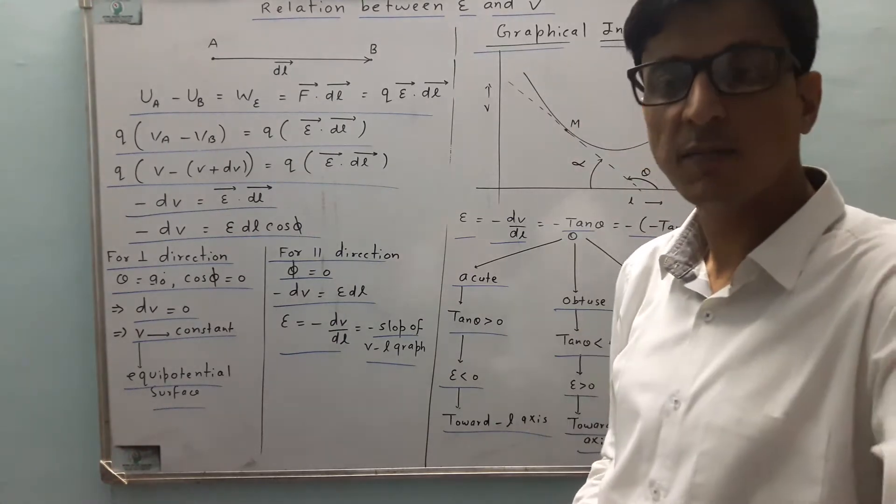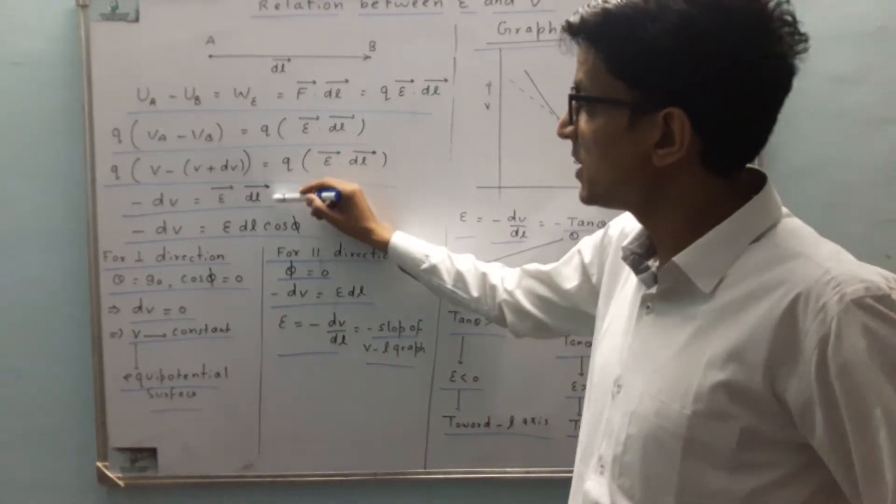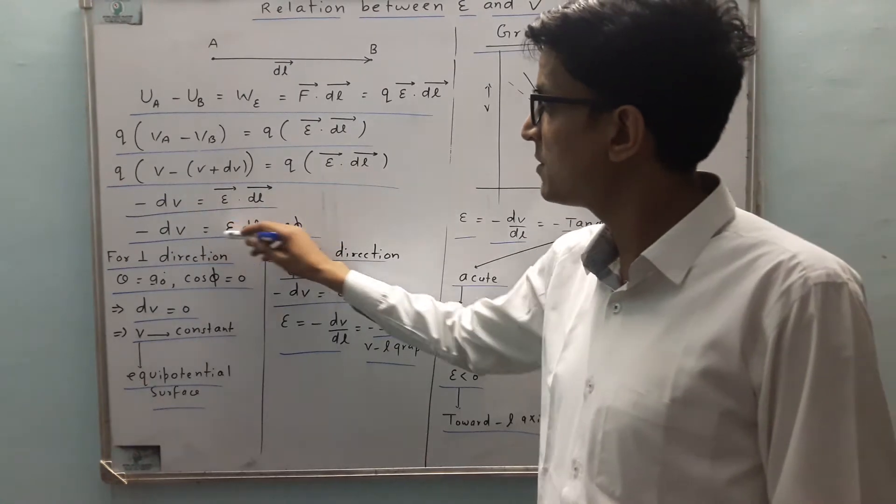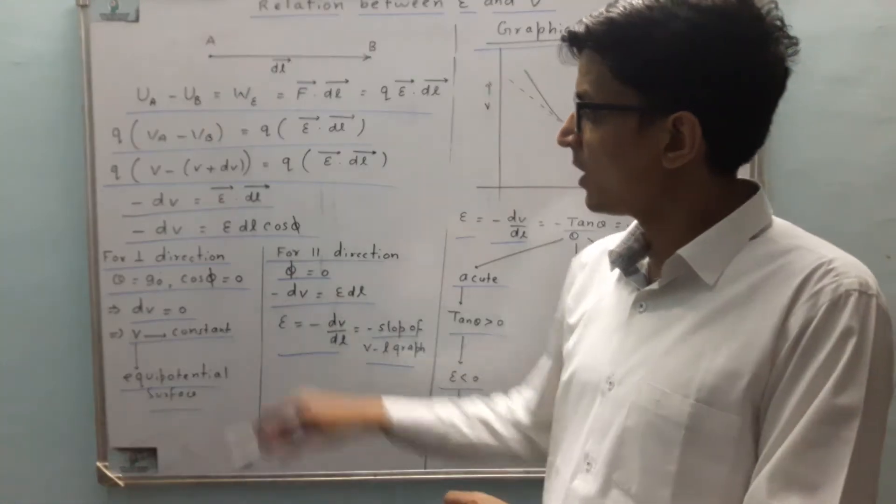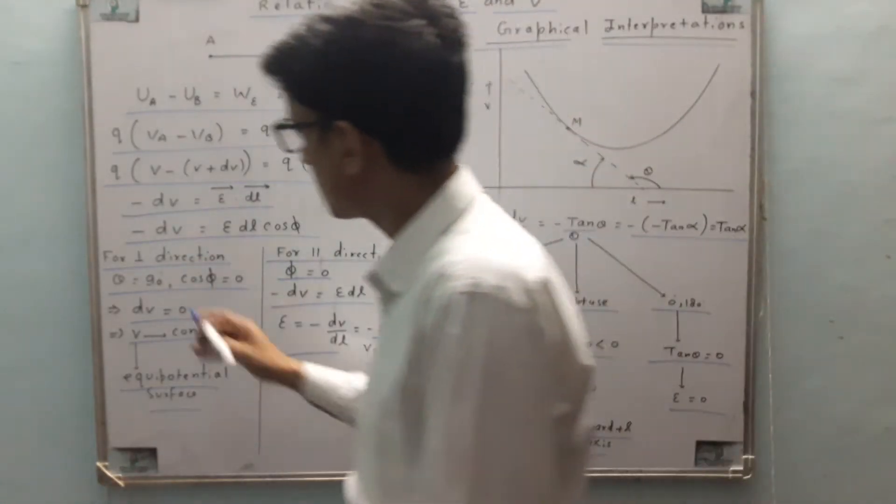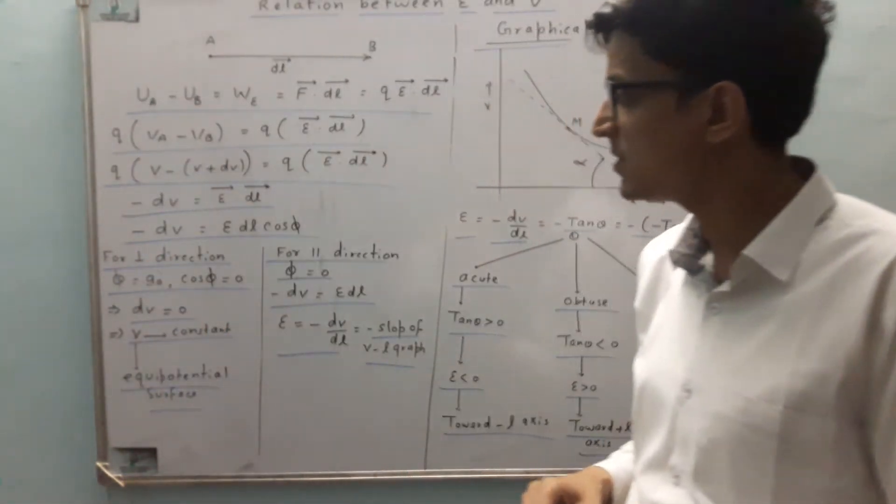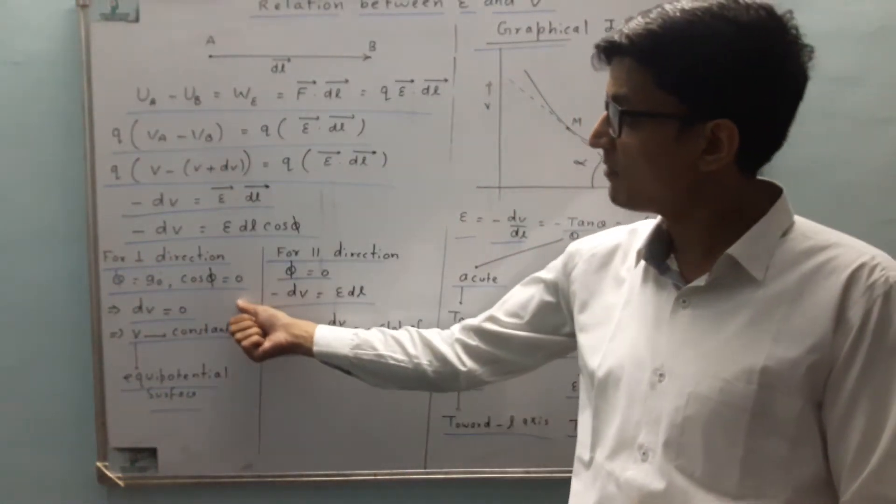Suppose the angle between electric field and displacement is phi. We have minus dV equals E DL cos phi. For perpendicular directions, phi is 90 degrees, so cos phi is zero. That means dV is zero.